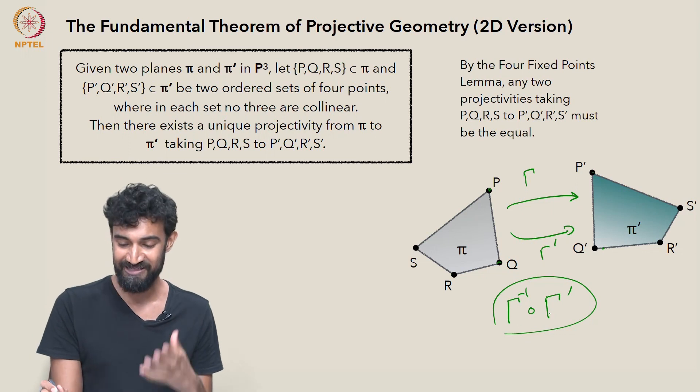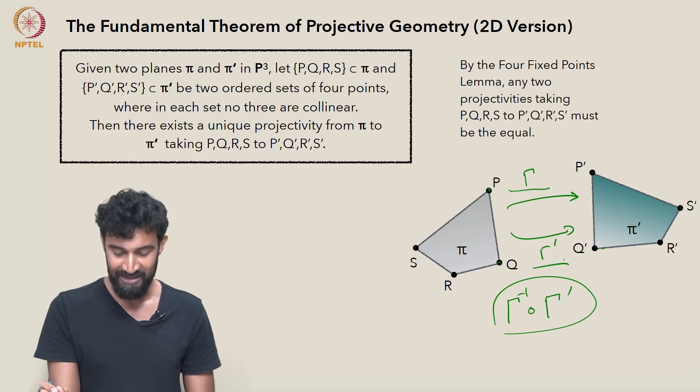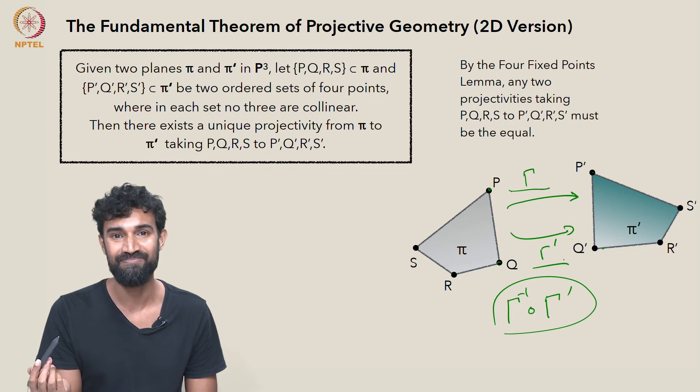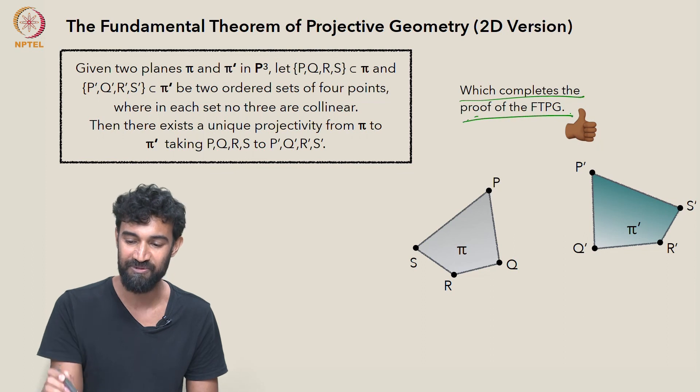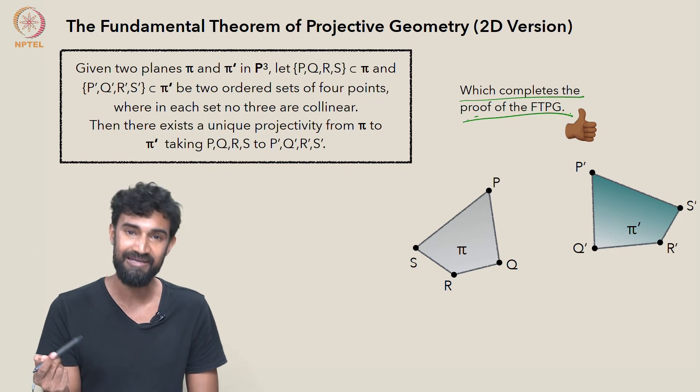So in fact, γ and γ′ had to be the same map. That completes the proof of the fundamental theorem of projective geometry in 2D.